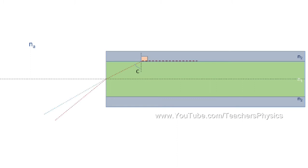Taking this path as a reference, consider another pathway between the axis and the reference path. Light entering will strike the core-cladding interface at an angle greater than the critical angle; hence it undergoes total internal reflection. This light undergoes multiple total internal reflections and can make it to the other end of the fiber, making it usable for communication.